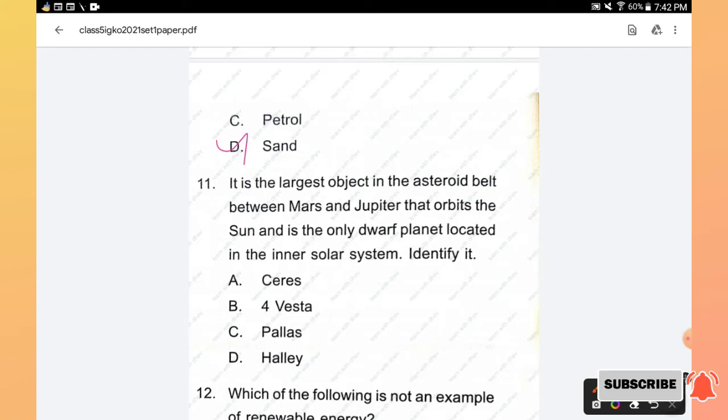Question number 11: It is the largest object in the asteroid belt between Mars and Jupiter that orbits the Sun and is the only dwarf planet located in the inner solar system. Identify it. Options are Ceres, Vesta, Pallas, and Halley.